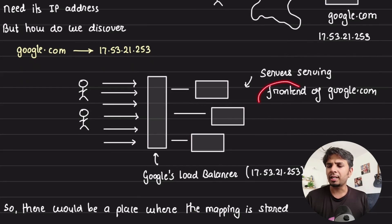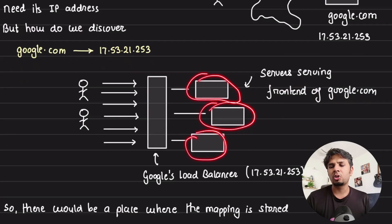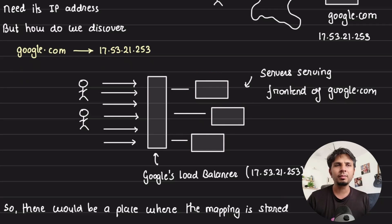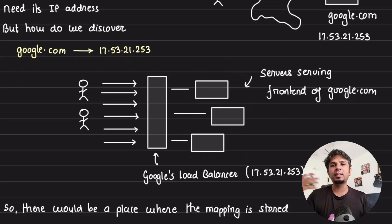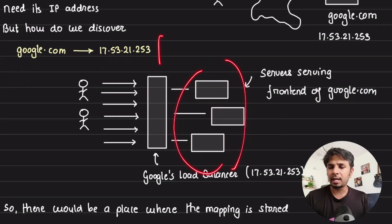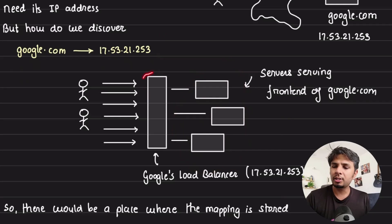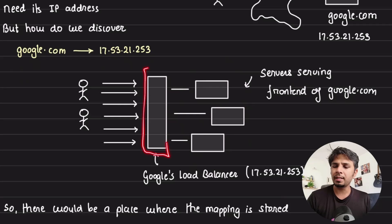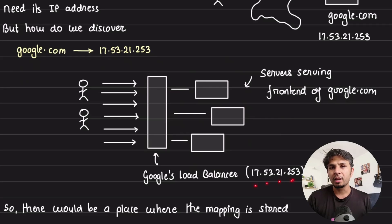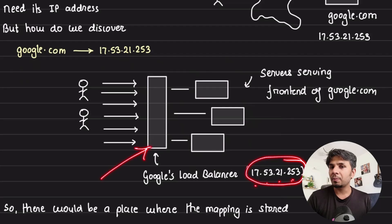On the back-end side of Google, there are a bunch of front-end servers responsible for serving google.com — these are the servers running Angular or whatever framework they use. These servers serve the homepage of Google, and they sit behind a load balancer. Assume the IP address of this load balancer is 17.53.21.253.